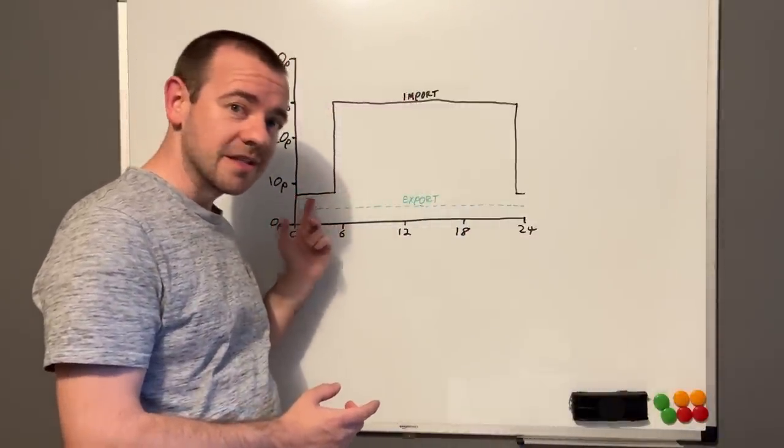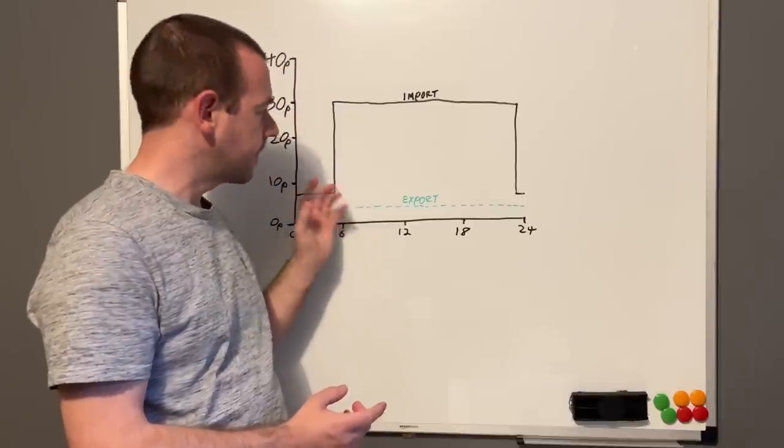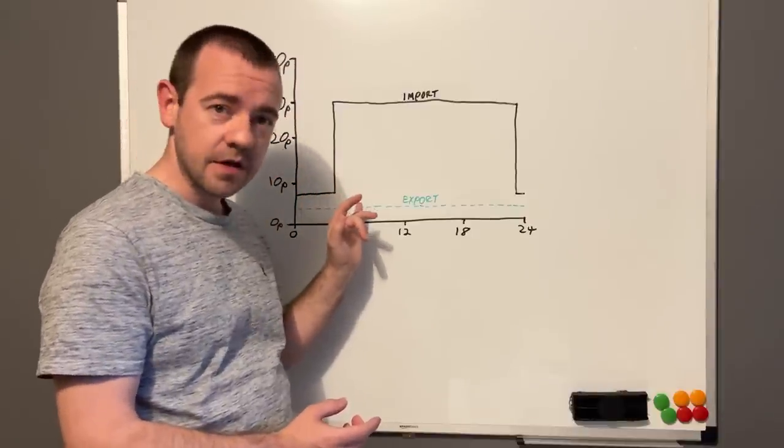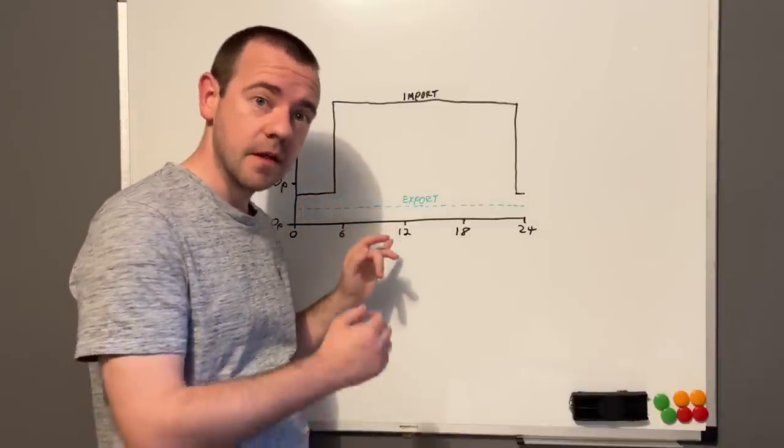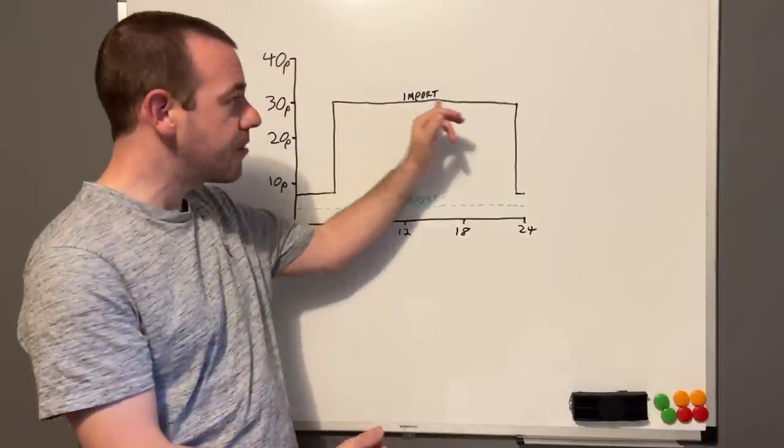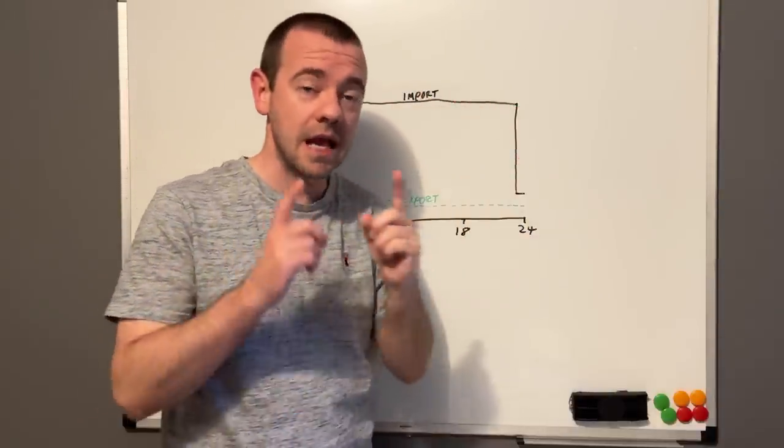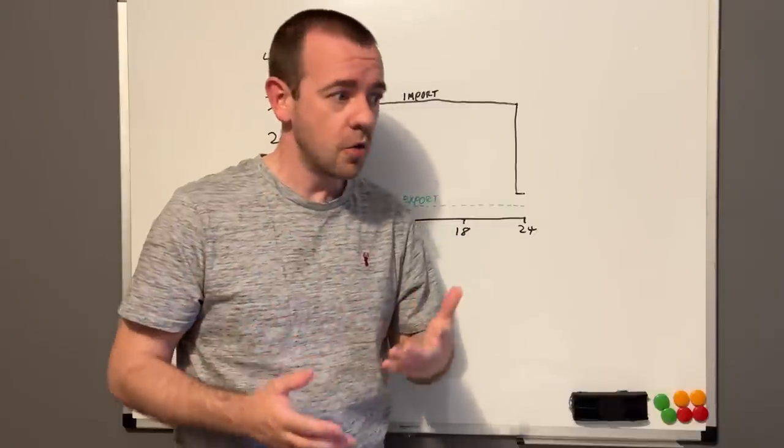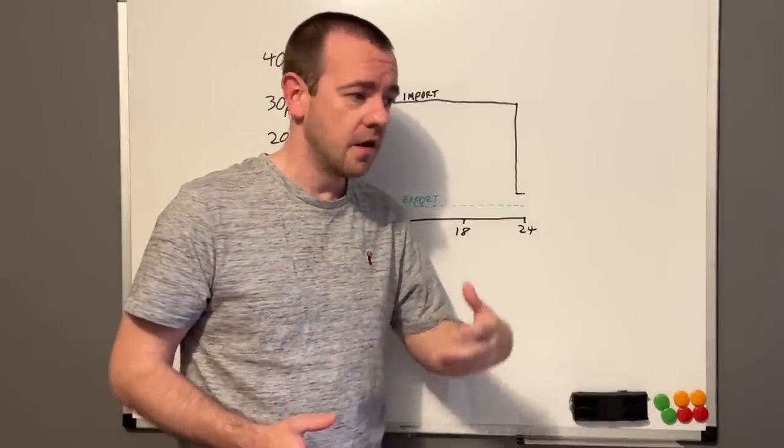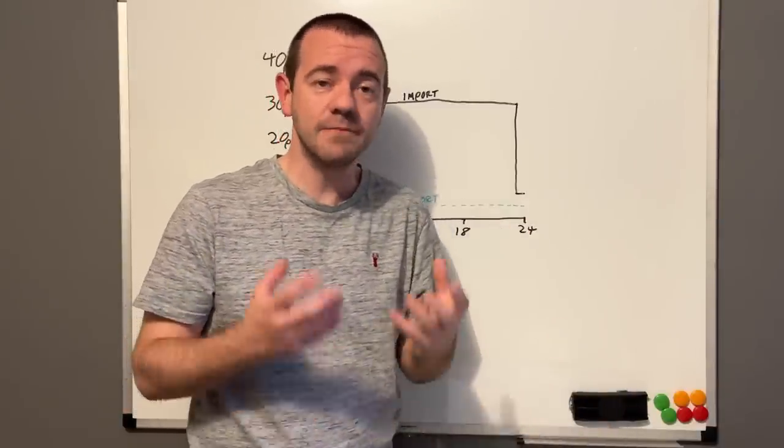So the tariff in question is this one. You get six hours at 7.5 pence per kilowatt hour. That's half past 11 at night until half past 5 in the morning. And then it's about 30 pence just shy for the rest of the day. So you pay more during the day but you get a super cheap nighttime rate.